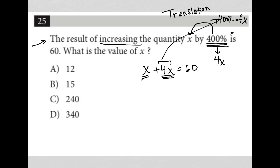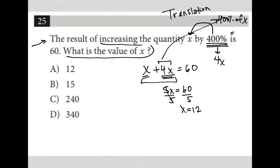x plus 4x is 5x, so we get 5x is equal to 60. I can divide both sides by 5 and get x is equal to 12. What is the value of x? Well, we just found it — x is 12. Therefore, the answer is choice A.